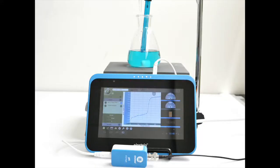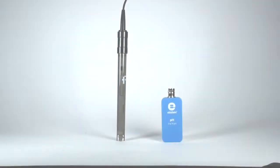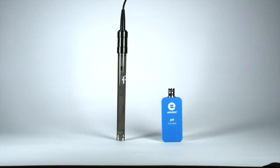Measuring pH is a key part of many chemistry experiments. The Einstein pH sensor has two parts, the sensor and the electrode.